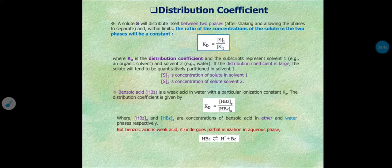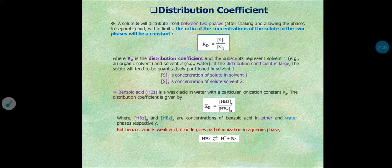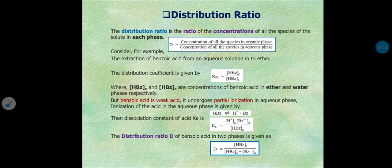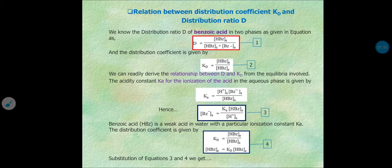Distribution coefficient has some limits because some solutes, if you want to separate them out, show partial ionization. That is why we cannot predict behavior using distribution coefficient alone. So the next principle is the distribution ratio, which is the concentration of all species in the organic phase divided by the concentration of all species in the aqueous phase, as we have already discussed.